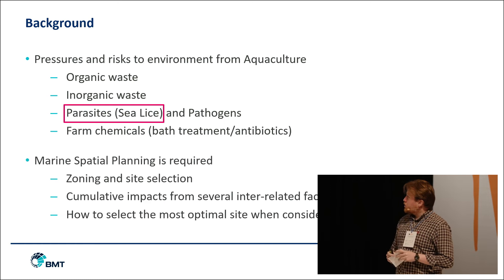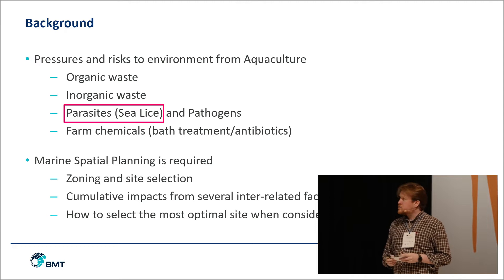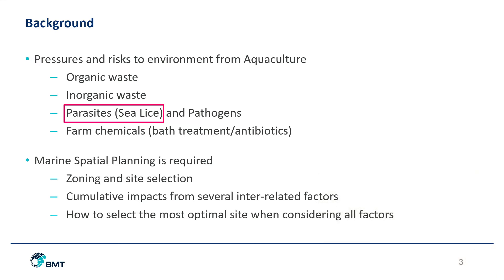Marine spatial planning is therefore required. To do this, you need zoning and site selection, and you also need to understand the cumulative impacts from several interrelated factors. From this, we can learn how to select the most optimal site when considering all these factors, looking at the ecological carrying capacity of the marine environment to achieve optimal fish stock.